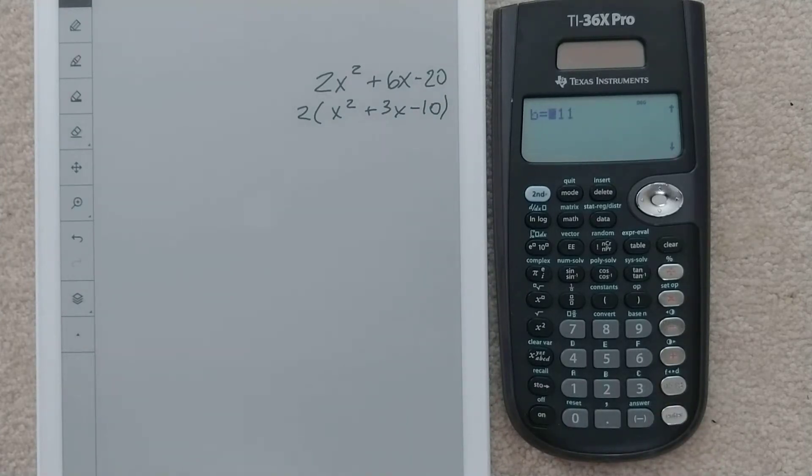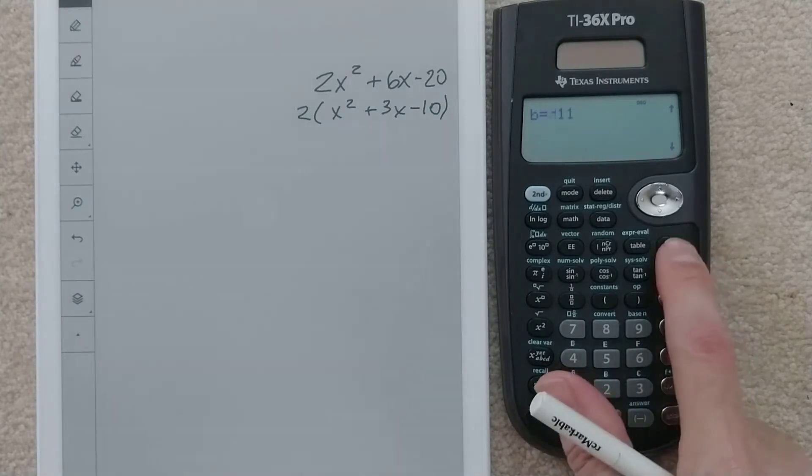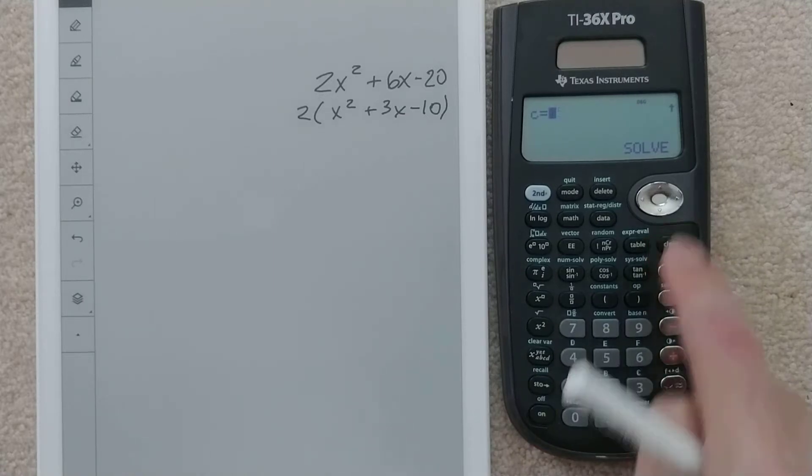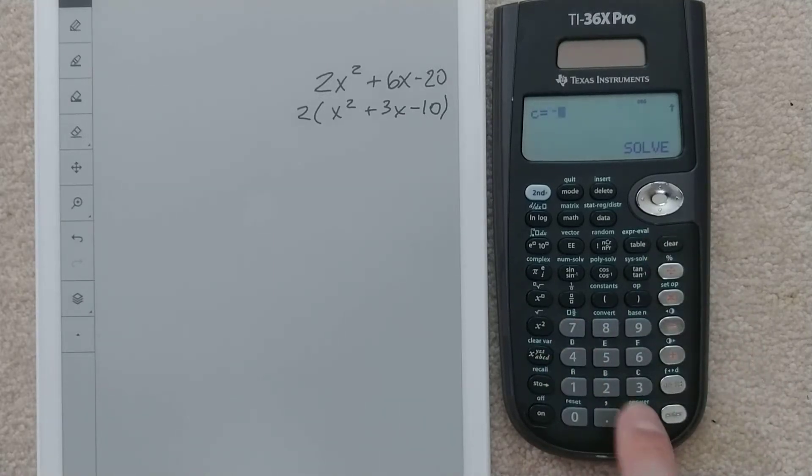We're going to put a 1. Our b value is 3, so I'm going to hit clear on this calculator and then type a 3. It seems like the quickest way to do it. Clear, and our c value is negative 10.